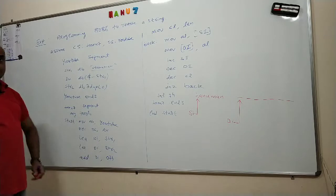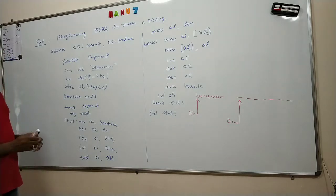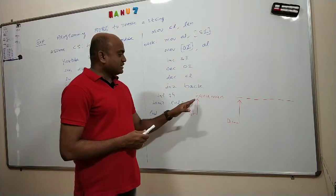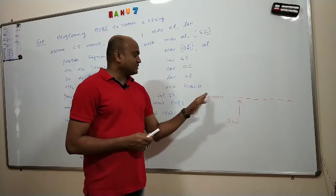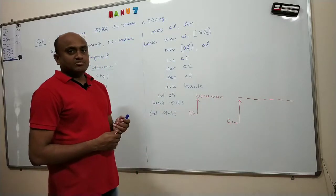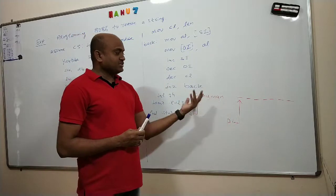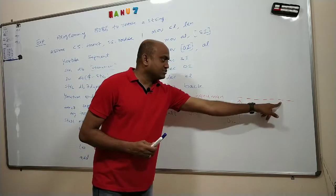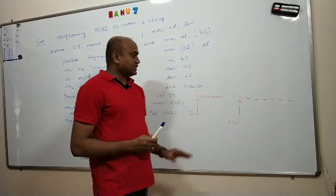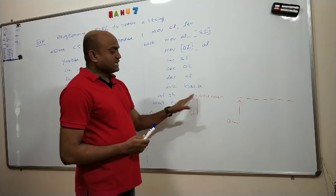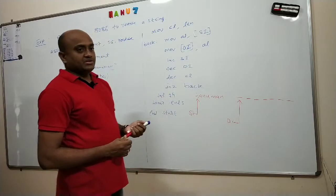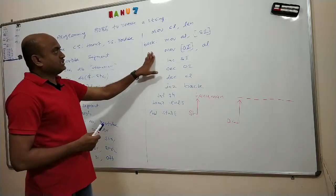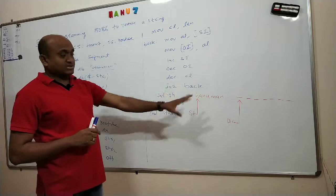Same like the moving string program. But here we cannot write REP MOVSB. If I write REP MOVSB, what happens? This H will come here, A will come there, N U M A. This will become only moving a string. But I want reverse of this string. This character should go there, this character should come here. So I should get N A M U N A H. We have to write the program completely. There is no instruction available to reverse the string.